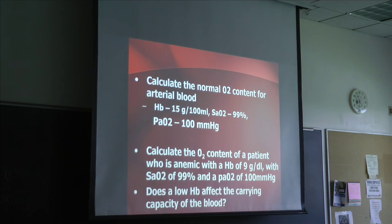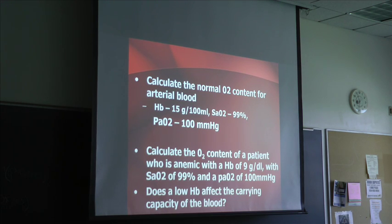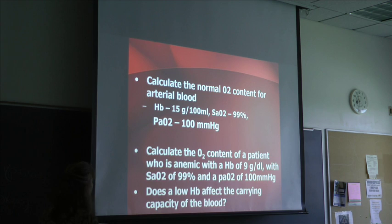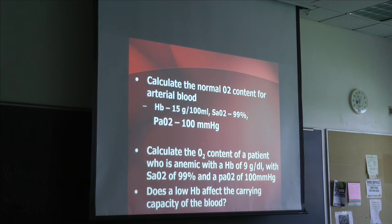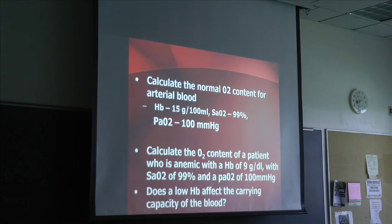Looking at the formula, you can see how very little oxygen is carried in the plasma and almost all of it is carried on the hemoglobin — showing the importance of hemoglobin to a respiratory therapist. Now calculate the oxygen content for an anemic patient whose hemoglobin is only 9 grams per deciliter, while saturation and PaO2 remain normal.